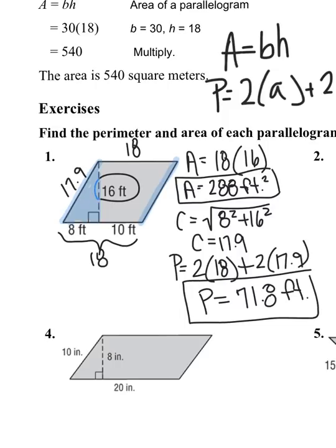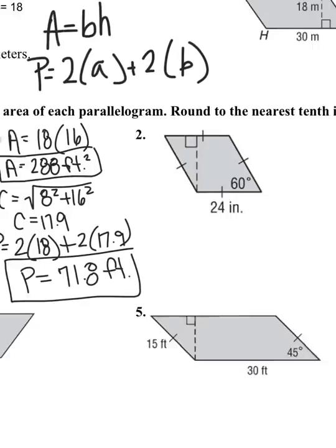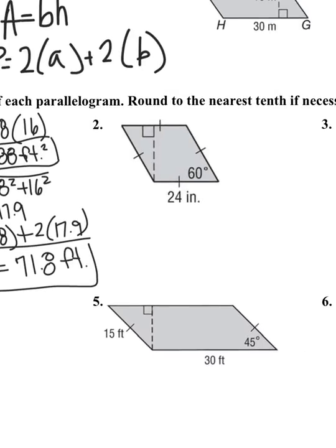Question number 2 — all sides are equal to each other, and an angle is given as 60 degrees. For a parallelogram, opposite angles are equal, so that small angle is also 60. Since all sides are equal, this side is 24. I'll use special right triangle rules to figure out the height of this parallelogram, and the height is across from my 60 degrees.